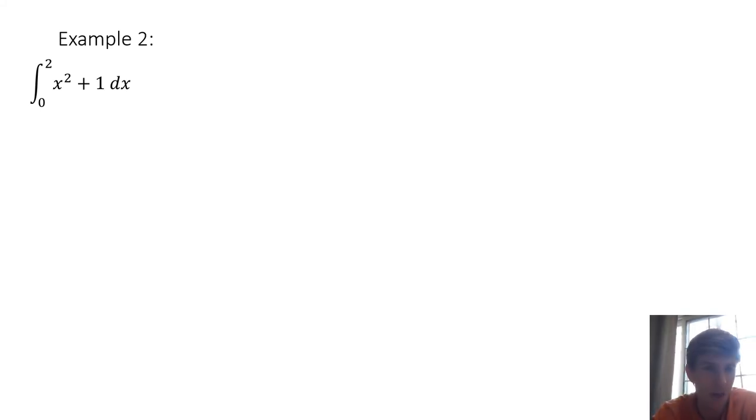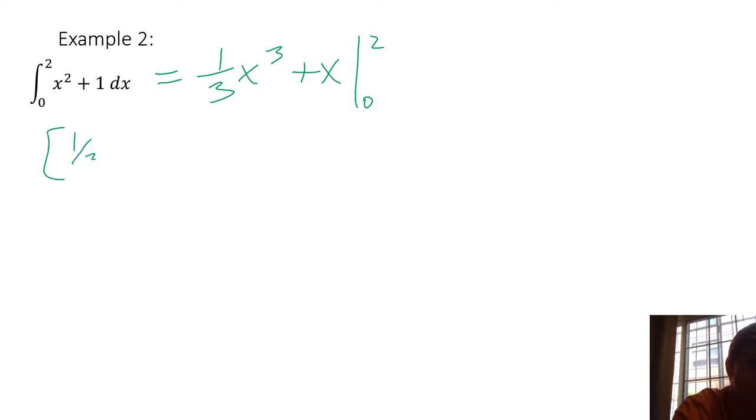Let's jump to this next example. Adding a term here, so now we have x squared plus 1, but still not too difficult. The first step is using our rules of integration to integrate the function. This first term, the x squared, that'll be 1/3 x cubed plus x, and I'm going to be evaluating that from 0 to 2. I just need to plug in 2 and then subtract out when I plug in 0.